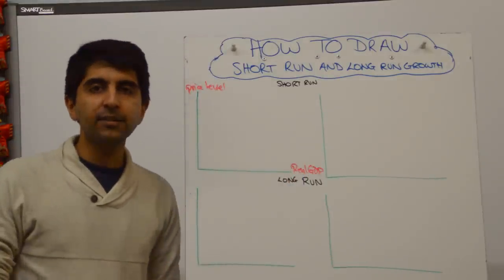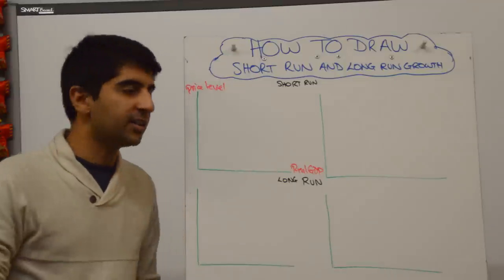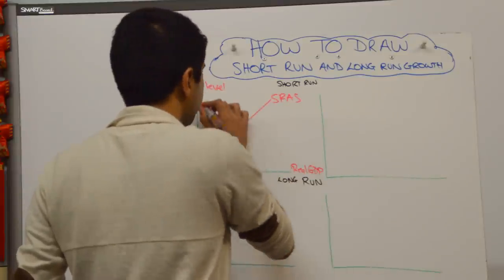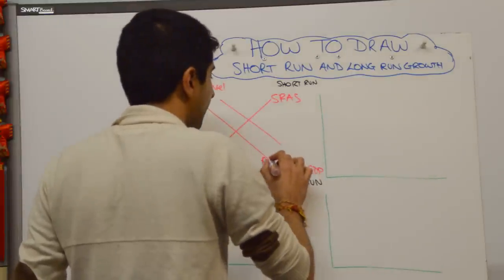All we need to show here is a really simple shift to the right of aggregate demand. I'm going to do it in the simplest way possible. We have SRAS and there's your shift of AD to the right.